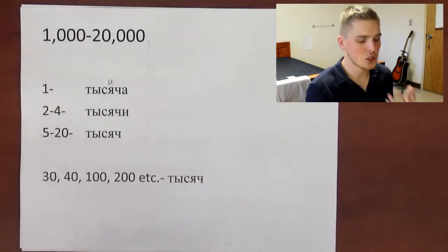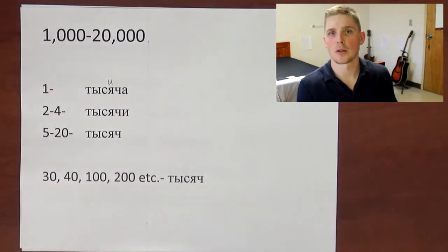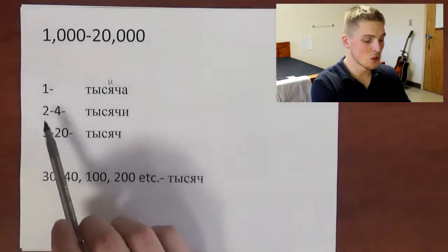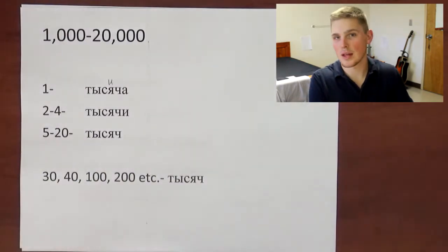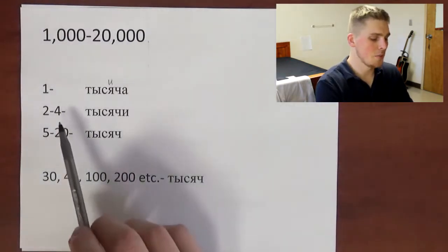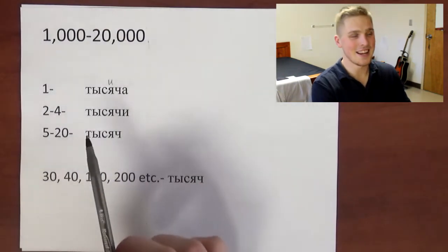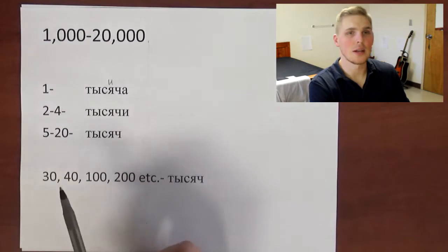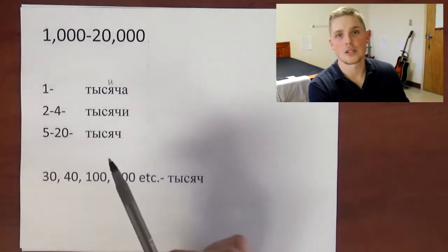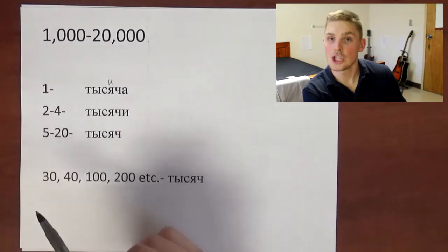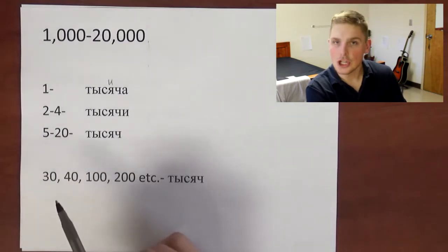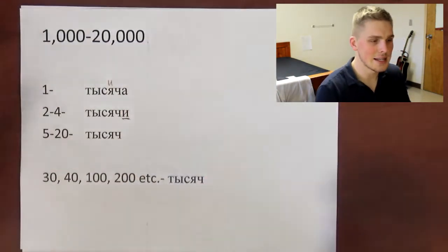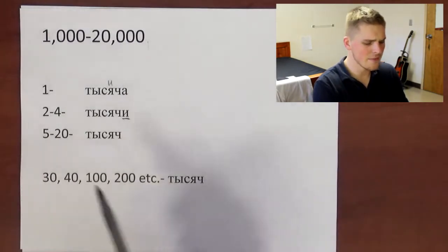But then we have two different variations of plural, two different endings for plural. For numbers two to four, so if it's two thousand, three thousand, four thousand, it's gonna be тысячи. So две тысячи is two thousand, три тысячи is three thousand, четыре тысячи is four thousand. So we have 'и' as an ending over here.